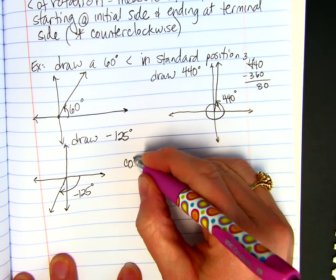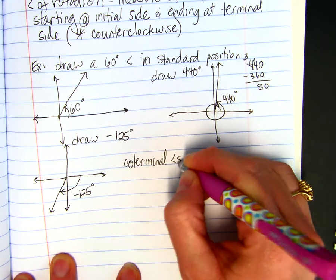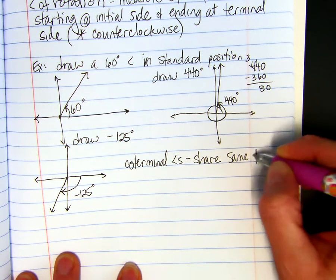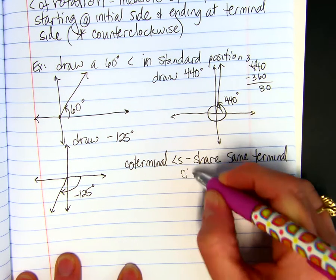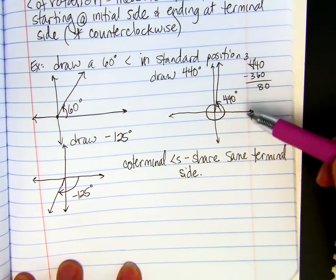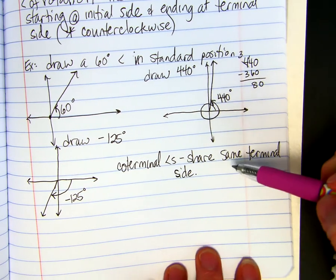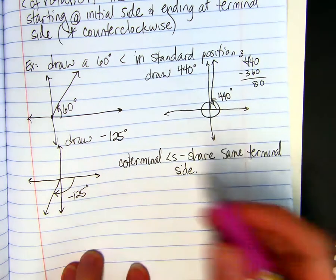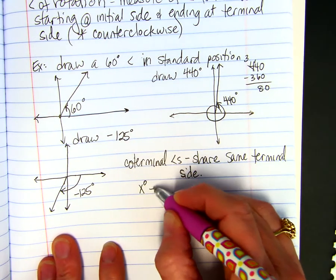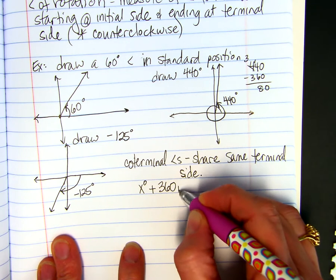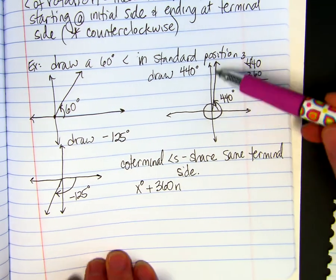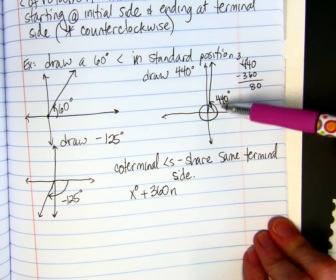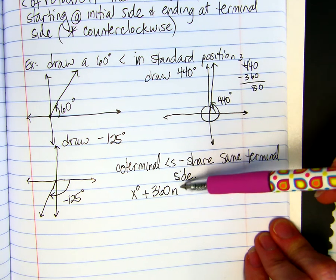Co-terminal angles basically share the same terminal side. For example, this 440 degrees is the same as an 80 degree angle. And there's a formula for it. If you take your x degrees and add 360 times any number n. So this 440 degree angle has an infinite number of co-terminal angles because it just depends on what n is.